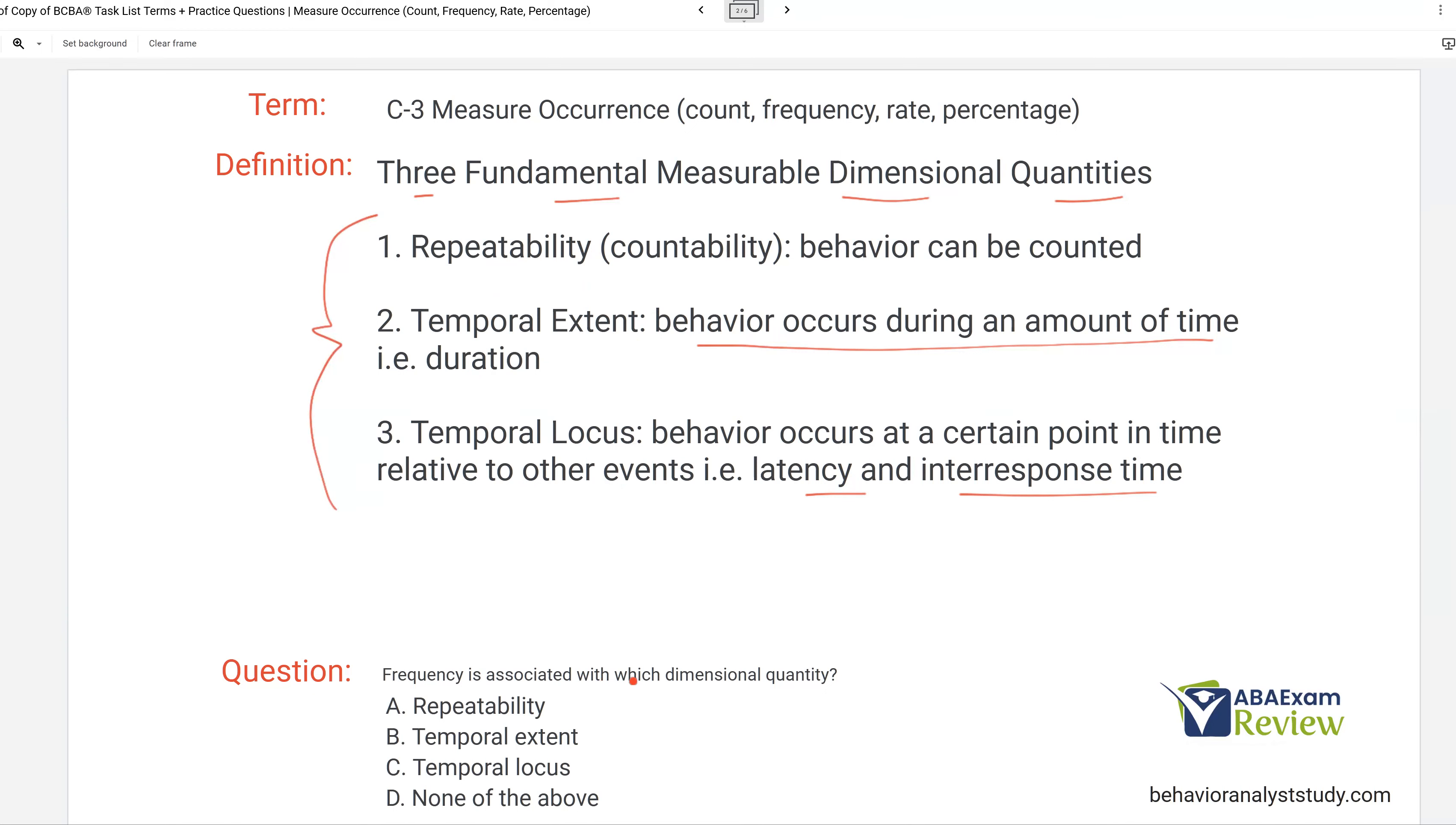So question, frequency is associated with what dimensional quantity? And that would be A, repeatability. It's just simply a count, right? A frequency is just a count of how many times a behavior occurred. Temporal extent would be like duration. Behavior occurs during an amount of time. And then temporal locus, behavior occurs at a point in time. That would be our latency and inter-response time.